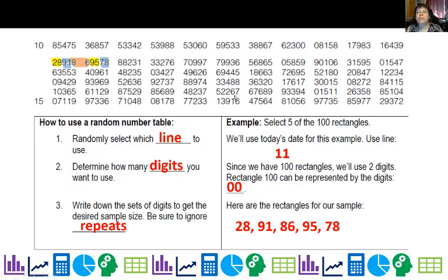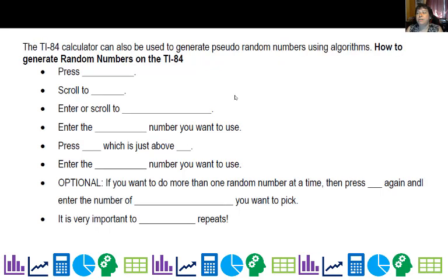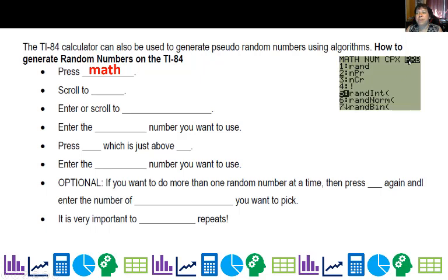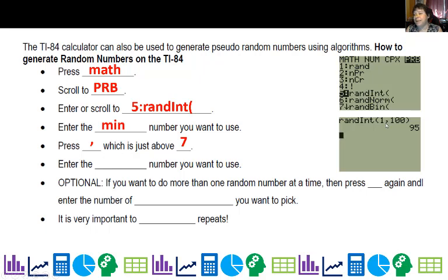Now there are other ways. This is from a table. Back in the old days before technology, when dinosaurs roamed the earth, we had books and tables and we would look up random numbers. Now we have technology like the TI 84 and I'll show you how to do that. You press math, scroll to PRB and then scroll to five rand int. Then you enter the minimum number you want to use. In this case, our minimum number is one. Then you're going to press comma to separate it. And then enter the max number you want to use. So I have one comma 100. And in this case, it gave me the random number of 95.